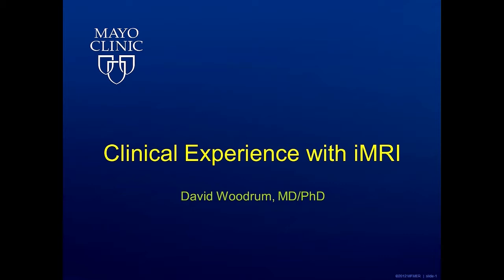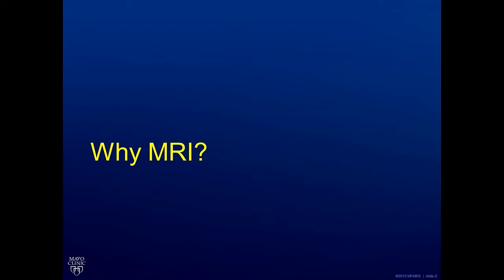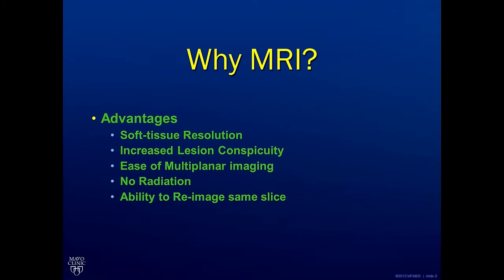Why did we choose MR to do procedures with? MR brings a special set of key features that are important and crucial to our procedures that we want to do under imaging guidance. At the very beginning, MR is the best way to achieve the highest resolution of soft tissue. This means that we can see tiny lesions many times where other imaging platforms may not be able to visualize these.